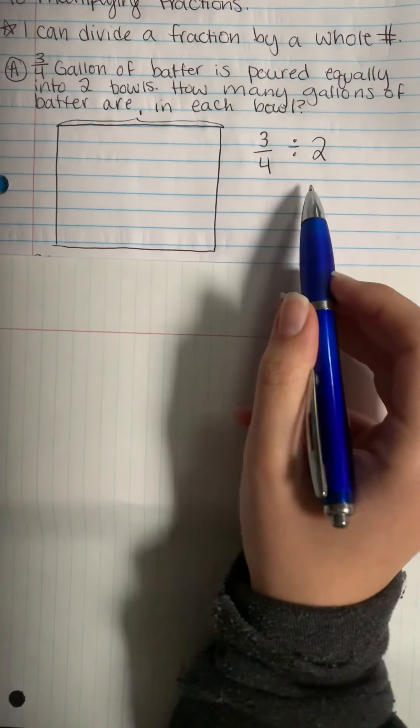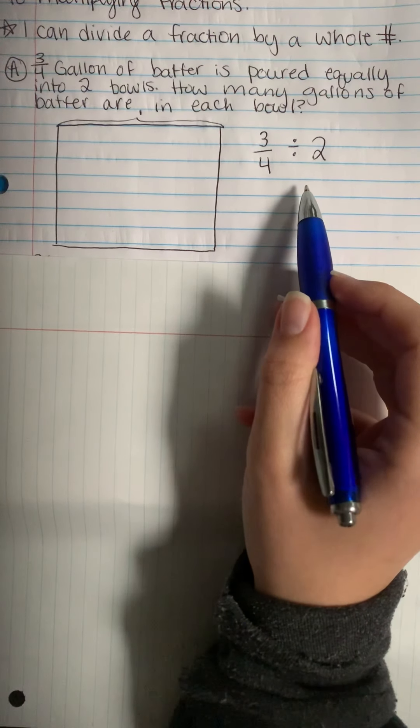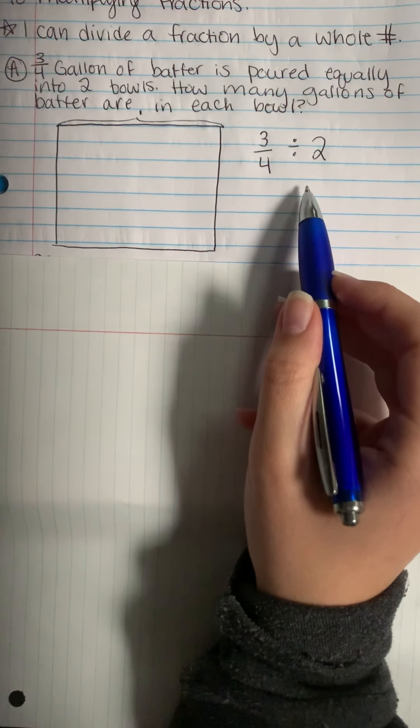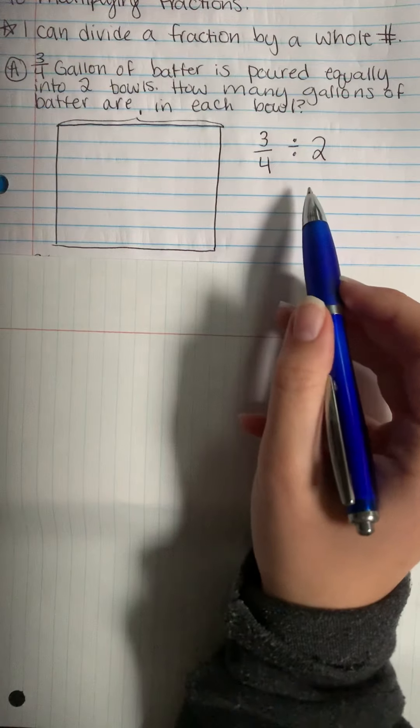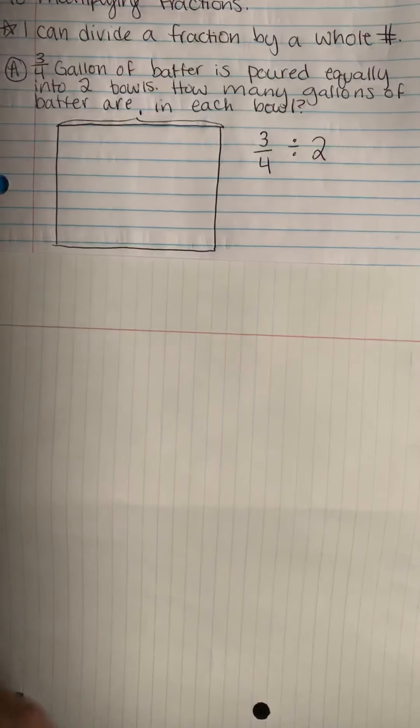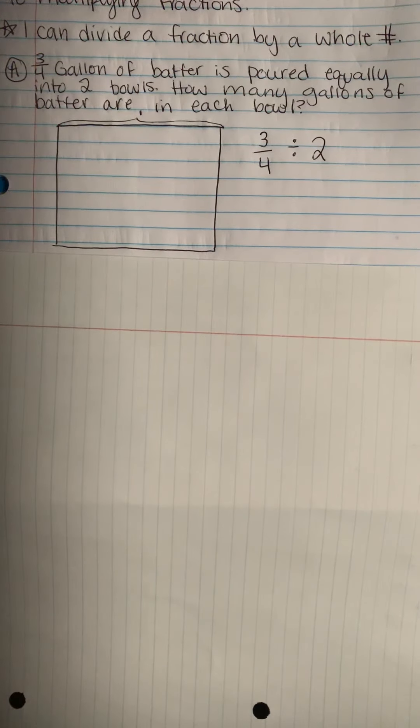So let's take a look at how to solve this using the area model. The whole or how much batter is being shared is three-fourths of a gallon. The story tells us that the batter is poured equally into two bowls. So we need to show our three-fourths in the model and we also need to show our two parts that it's being split into.